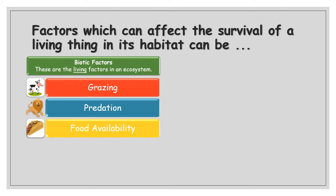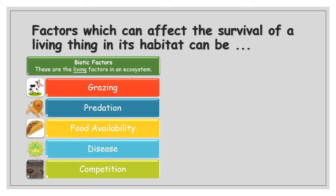Food availability is another biotic factor — the amount of food available to organisms impacts how many of them can live. Disease, which is caused by living things, means more disease leads to fewer organisms surviving. And competition — we talked about that last week — competing for resources and for mates all affects the chances of survival. Having covered living factors, we're now going to talk about non-living factors.